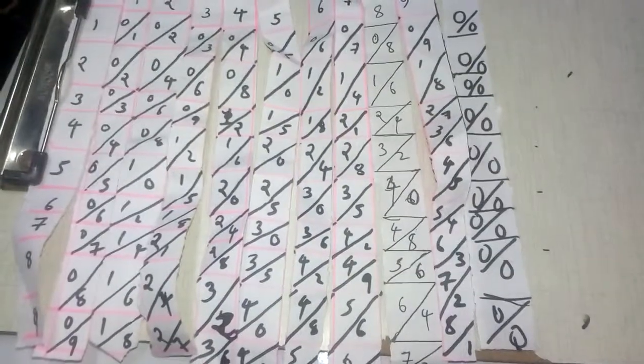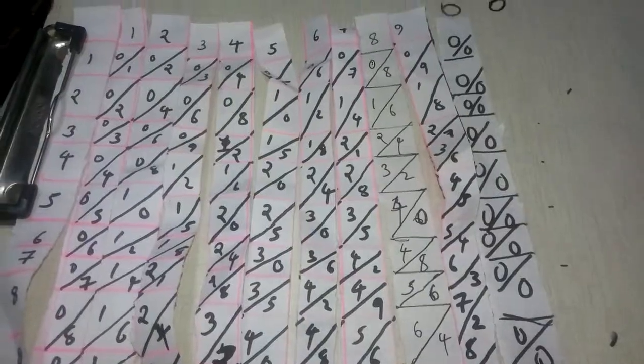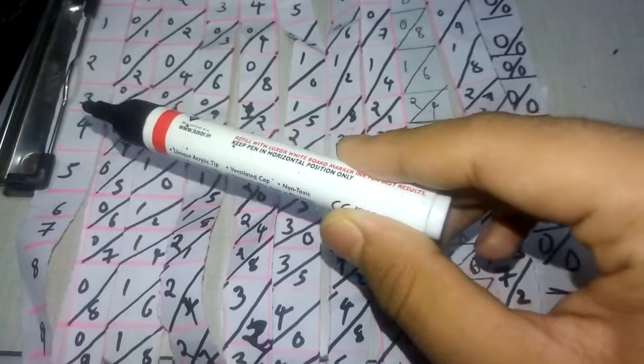Mechanical calculating devices can be classified into manual calculating devices and semi-automatic calculating devices. Examples of manual calculating devices are abacus and Napier's Bones. Now we will see how calculations are performed in Napier's Bones. Here all the tables are written.